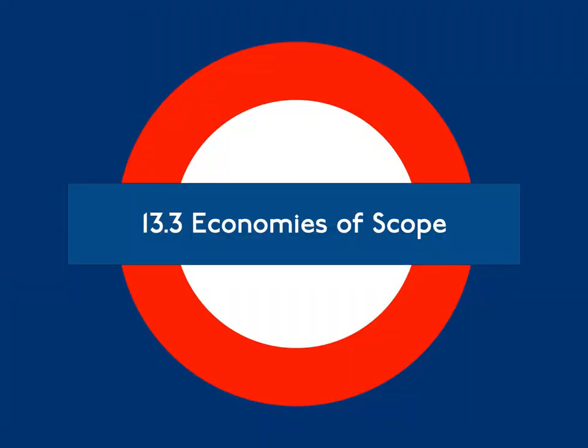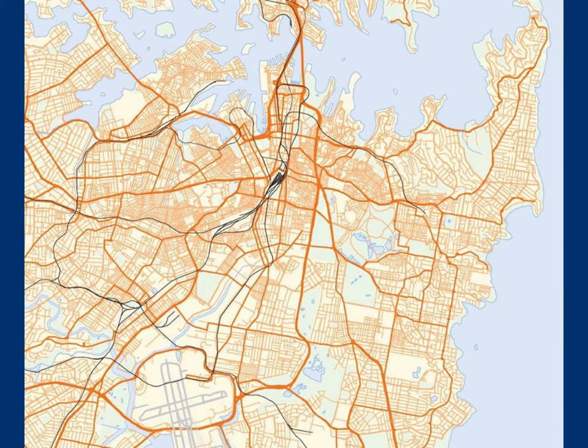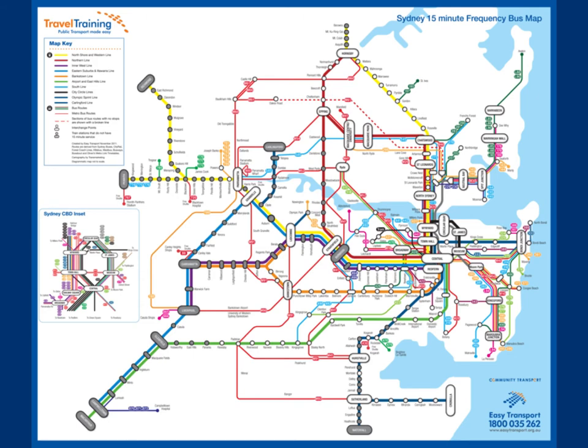13.3: Economies of Scope. An organization is said to operate with economies of scope if the cost of producing two outputs with one organization is less than the cost of producing each output with two different organizations. Like economies of scale, economies of scope are also everywhere in transport. We build roads that serve multiple origins and multiple destinations rather than having a separate road for each origin-destination pair because it is less expensive to serve multiple markets with one road. Buses and trains serve passengers boarding and alighting at different places because it is less expensive than having multiple but more direct trains. Train stations serve trains with different destinations, which is less expensive than building a separate station for each service.